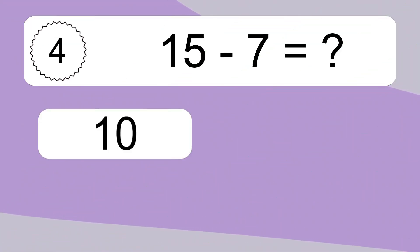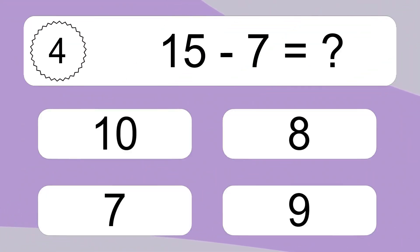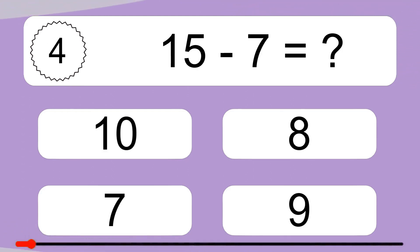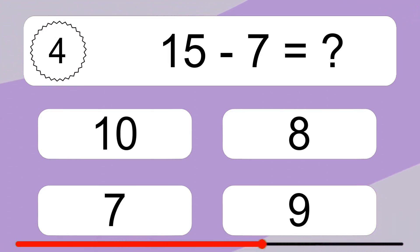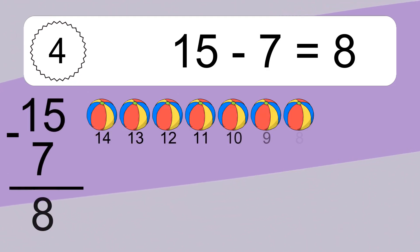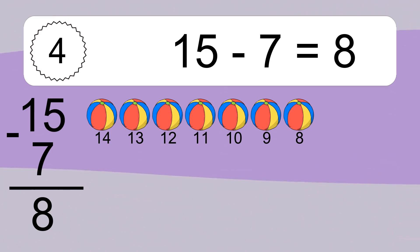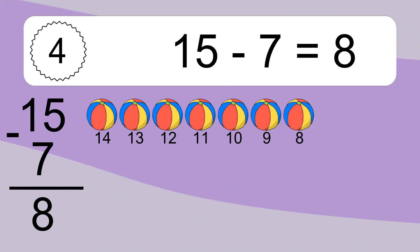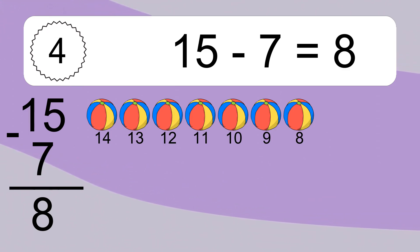15 minus 7 equals what? 15 minus 7 equals 8. Let's count it. 14, 13, 12, 11, 10, 9, 8.